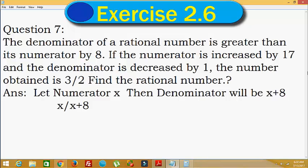Now if the numerator, which is x, is increased by 17, we have x plus 17 in brackets. And the denominator is decreased by 1, that is minus 1. So the denominator becomes x plus 8 minus 1, which is x plus 7. The result obtained is equal to 3 divided by 2. As per the statement we can write it like this.